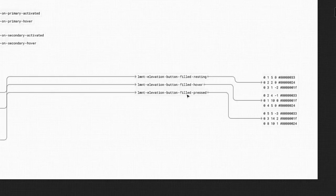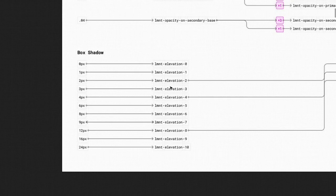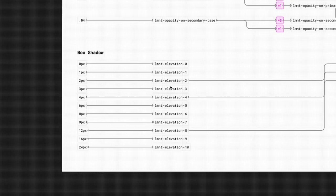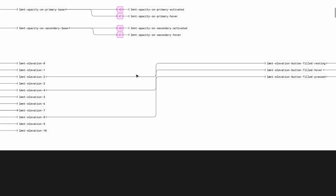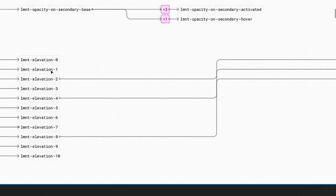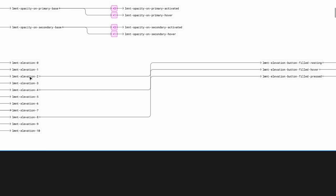The same approach applies to elevation and shadow values. You have 'elevation.0', 'elevation.1' as nicknames, and 'elevation.button.filled.resting', 'elevation.button.filled.hover', 'elevation.button.filled.press' as component use cases, each with their own pixel values like 2, 4, and 8. So when a developer asks which shadow value to use, you just say 'elevation.button.filled.resting'.